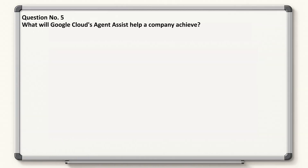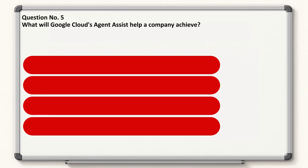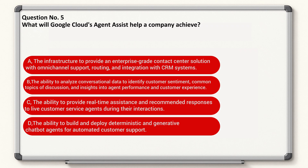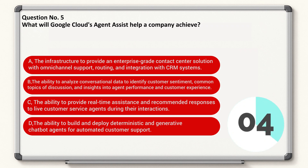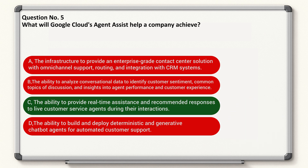Question number five: what will Google Cloud's Agent Assist help a company achieve? Correct answer is C.